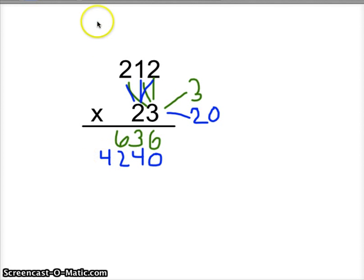Now since we just multiplied these in parts, we need to go ahead and add them together. Because the 636 is 212 times 3, and the 4,240 is 212 times 20. So we need to make sure that we add these together to get 212 times 23.